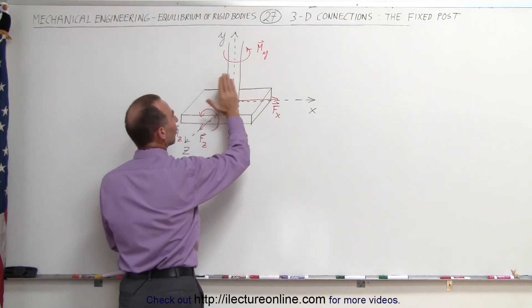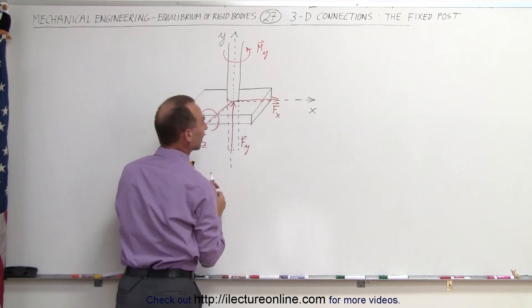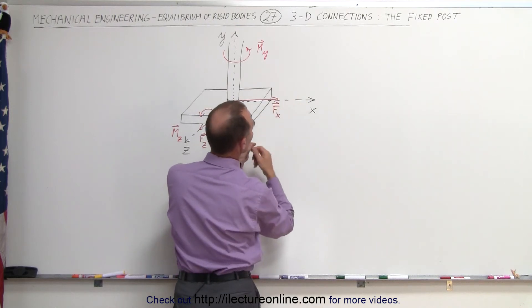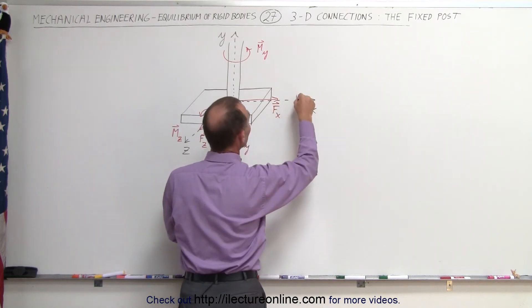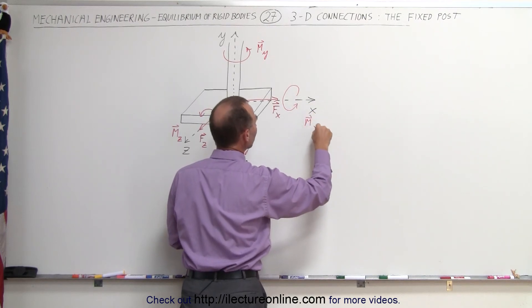And since the post cannot pivot back and forth in this direction, it creates a moment about the x axis as well. Again, point your thumb in the direction of the x axis. Your fingers will curl in the direction of the moment. So here we have a moment in the x direction.